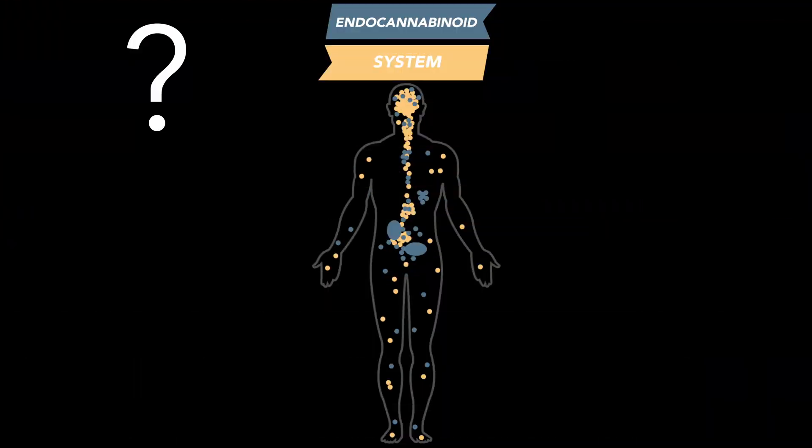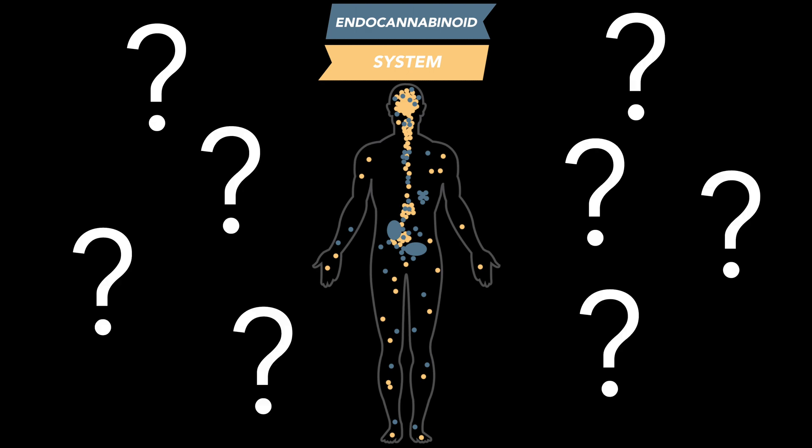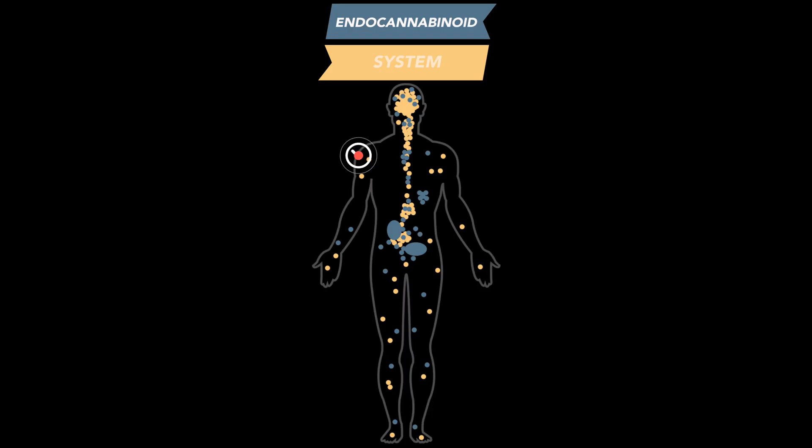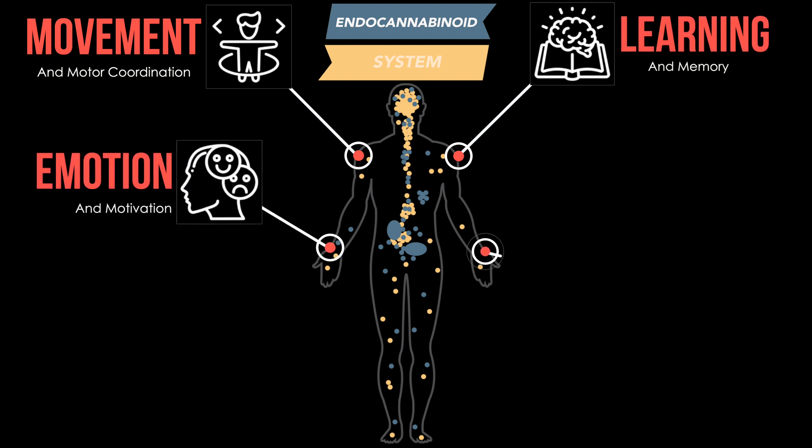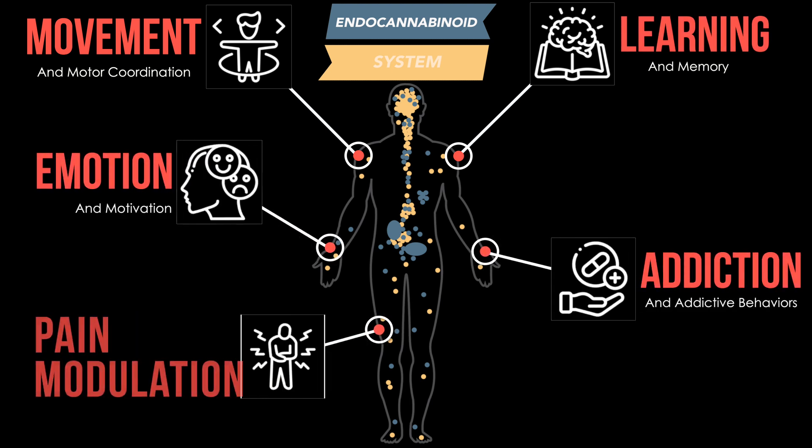Now there's a surprising amount of information that we don't know about the ECS, but what we do know is that it plays an important role in multiple aspects of neural functions, including the control of movement and motor coordination, learning and memory, emotion and motivation, addictive-like behavior, and pain modulation.